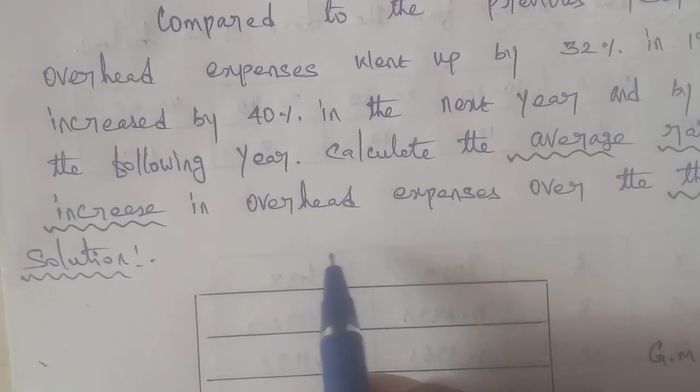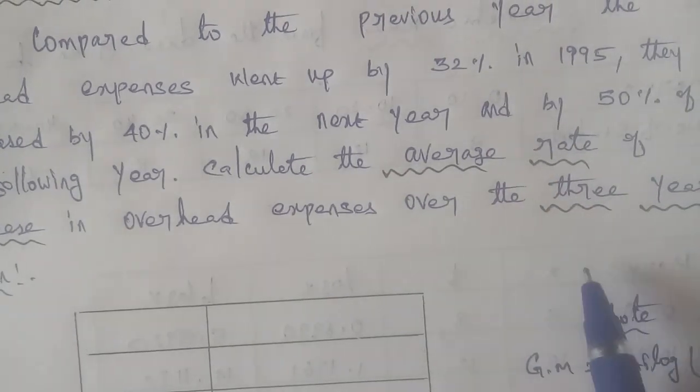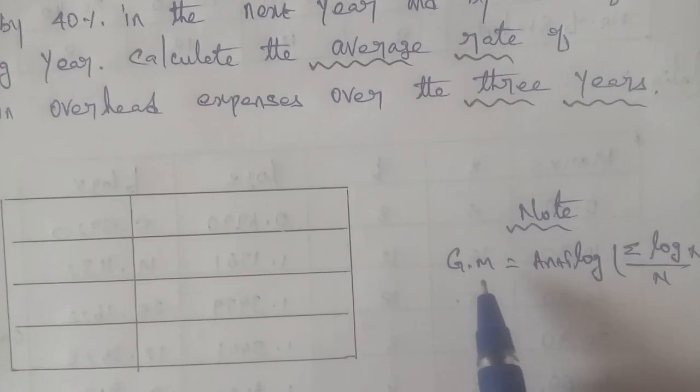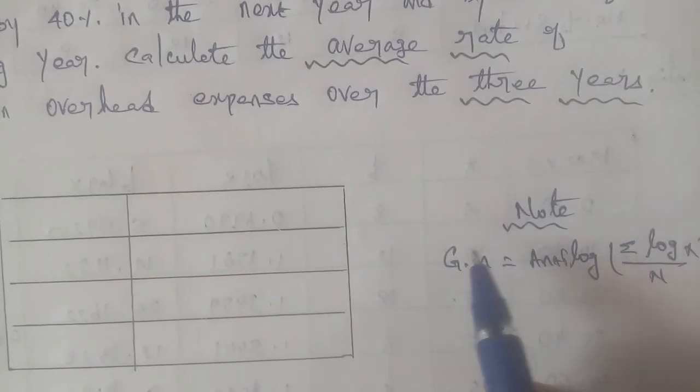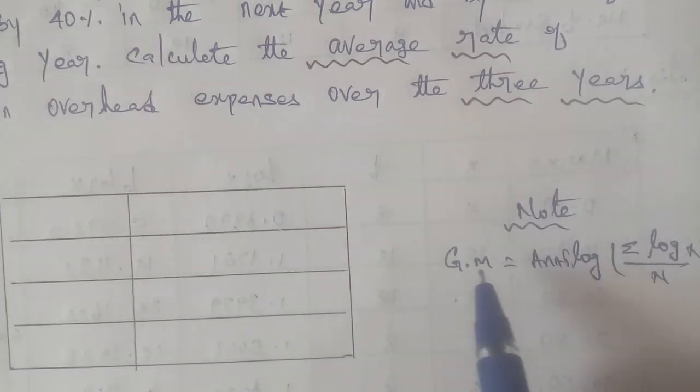Here we will use the average rate of increase in three years. So we will now apply the geometric mean formula. Given the question, we will apply the geometric mean formula.